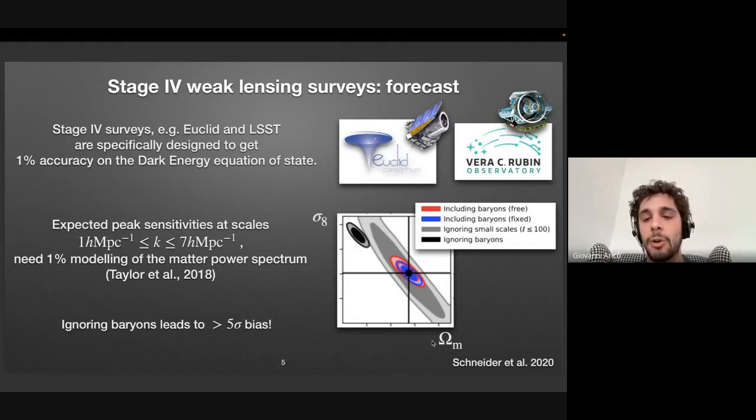And therefore, we need to have a matter power spectrum precise to one percent up to very small scales. And in this work by Schneider and others in 2020, they try to quantify what would be the error if we don't consider these baryons. So if we do consider baryons, we have these blue contours here, if we have perfect knowledge of the baryonic effects. If we ignore completely baryons, we would get these black contours. So these are five sigma bias in sigma eight, in the amplitude of fluctuation in the universe and in omega matter, the matter density. If we do consider baryonic effects, but we don't know the exact model, so we marginalize over them, we get these red contours. So we're going to miss part of information, but still be unbiased. And if we do like the Dark Energy Survey and just throw away all the small scales where these baryonic effects are more important, we throw away a lot of the information and we get this gray contours.